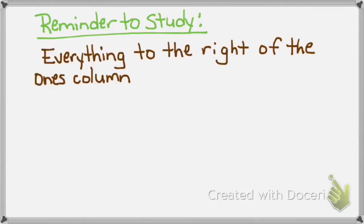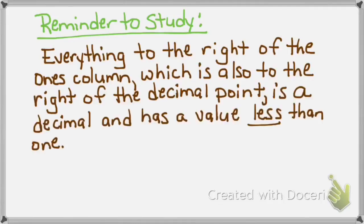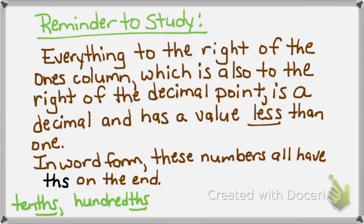Here's a reminder to study: everything to the right of the ones column, which is also to the right of the decimal point, is a decimal and has a value less than one — like less than a whole Hershey bar. In word form, these numbers all have THS on the end. Tenths means it takes ten pieces to make a whole. Hundredths means it takes one hundred pieces to make a whole. Thousandths means it takes one thousand pieces to make a whole. Anything ending with THS stands for a decimal, and that's how many pieces it takes to make one whole.